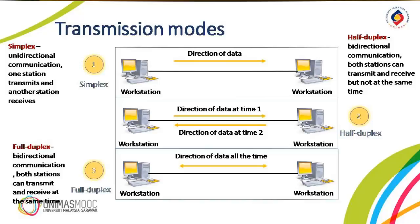The last one is the full-duplex system. In a full-duplex mode, also called duplex, both stations can transmit and receive simultaneously. The full-duplex mode is like a two-way street with traffic flowing in both directions at the same time. In a full-duplex mode, signals going in one direction share the capacity of the link with signals going in the other direction. This sharing can occur in two ways.